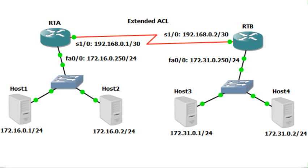If the standard access list is to be placed near to the destination, an extended access list should be implemented close to the source network. In this example we have two networks.